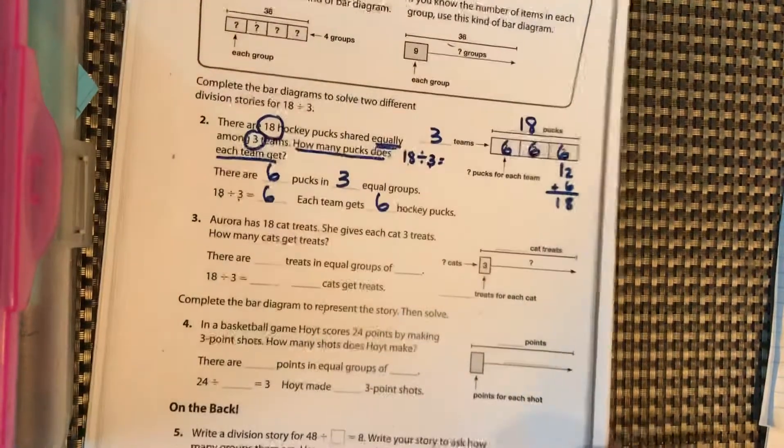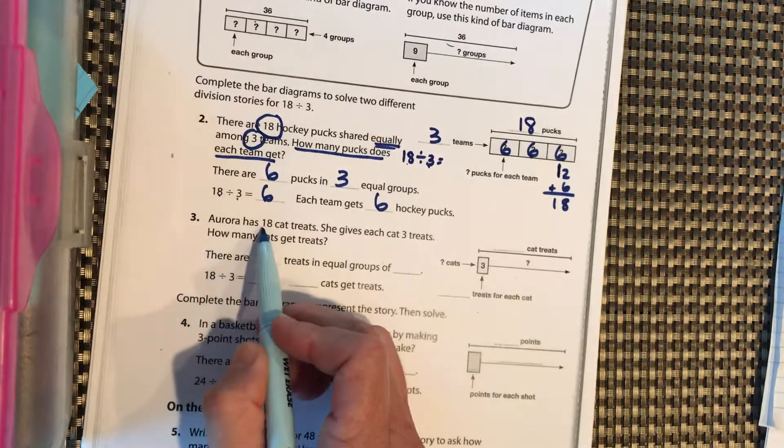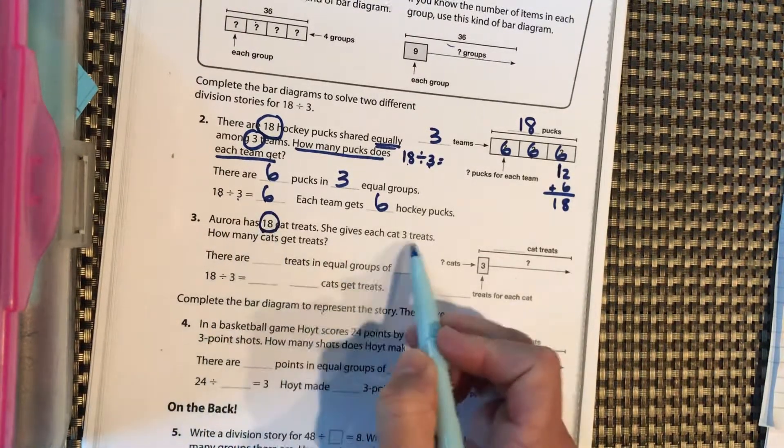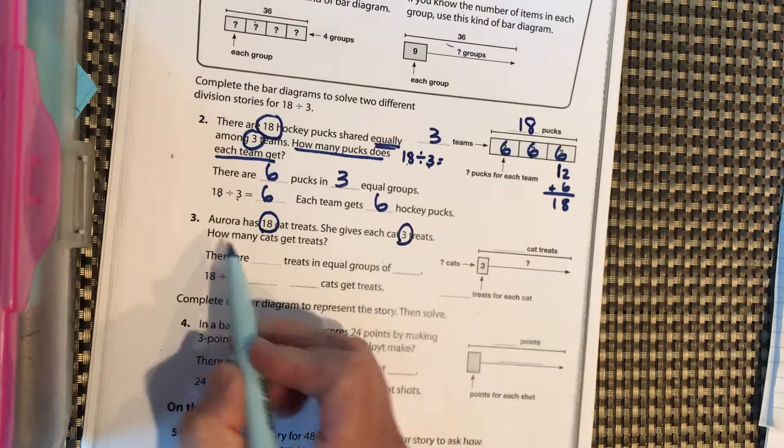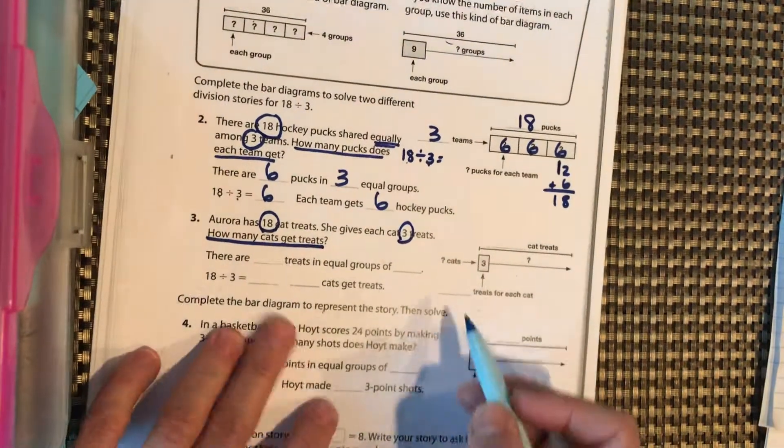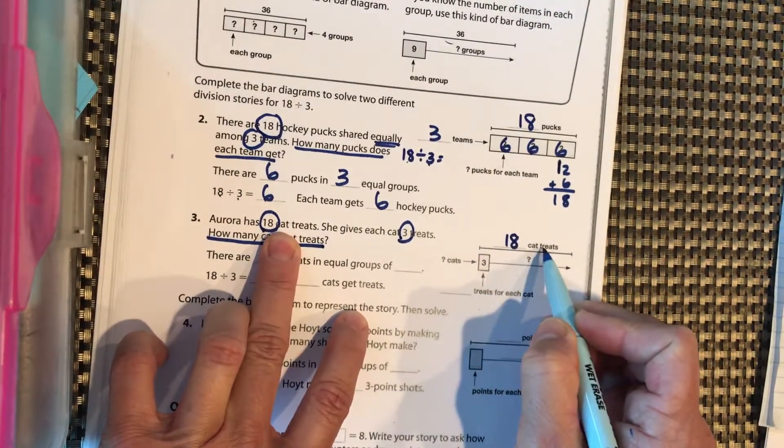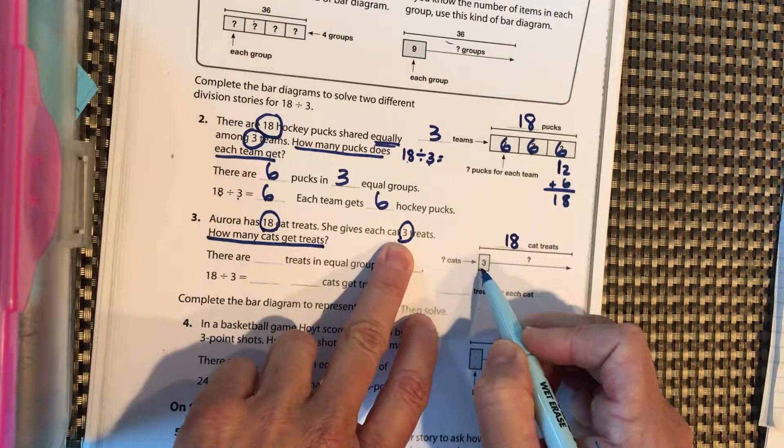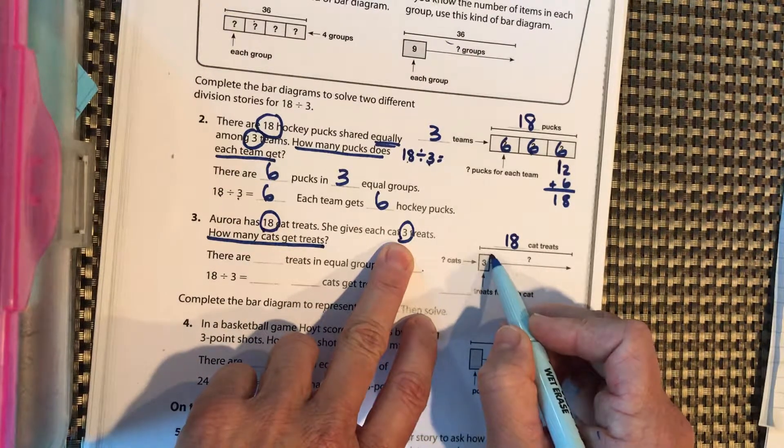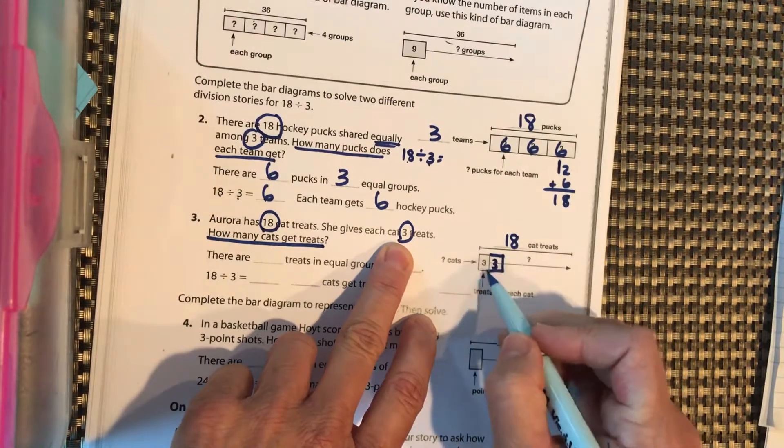Here's another great division math story or word problem. Aurora has 18 cat treats. She gives each cat three treats. How many cats get treats? So what's our total number? It would be 18. She has a total of 18 cat treats. She gives each cat three treats. We have to keep drawing these boxes until we run out of our 18, right?